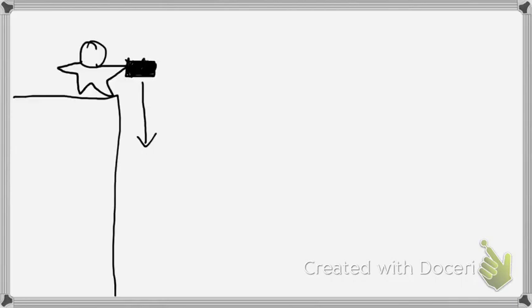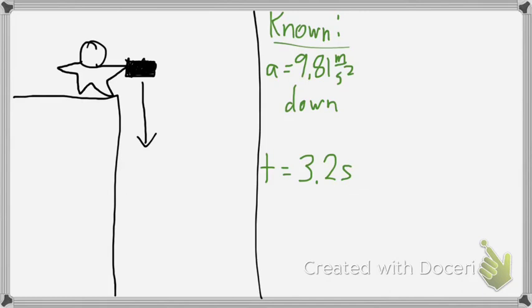So here he is, standing on top of the building, getting ready to drop the laptop, which will then move straight downward. I've started making a list of my knowns, and these are values that were just given in the problem. So I know my acceleration is 9.81 meters per second squared in the downward direction, and the time that I'm going to deal with is 3.2 seconds. So what I've done here is assigned them to their particular variable, and I've included units with it as well.